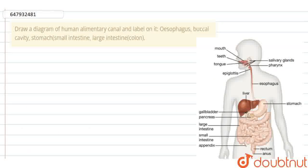Hi guys, so the question is: draw a diagram of human alimentary canal and label on it esophagus, buccal cavity, stomach, small intestine, large intestine, that is colon.